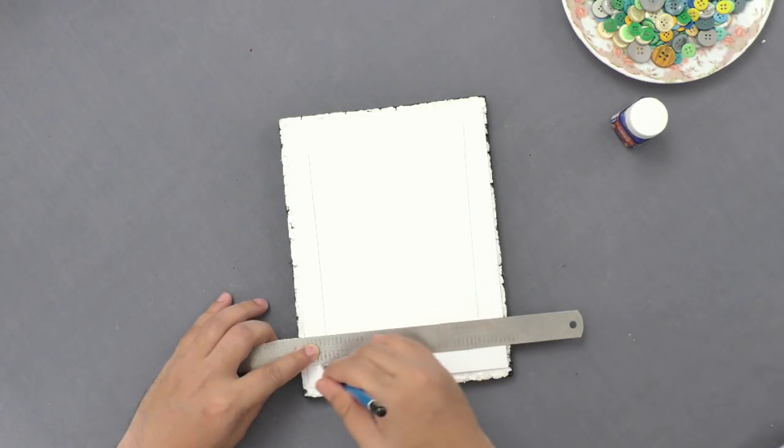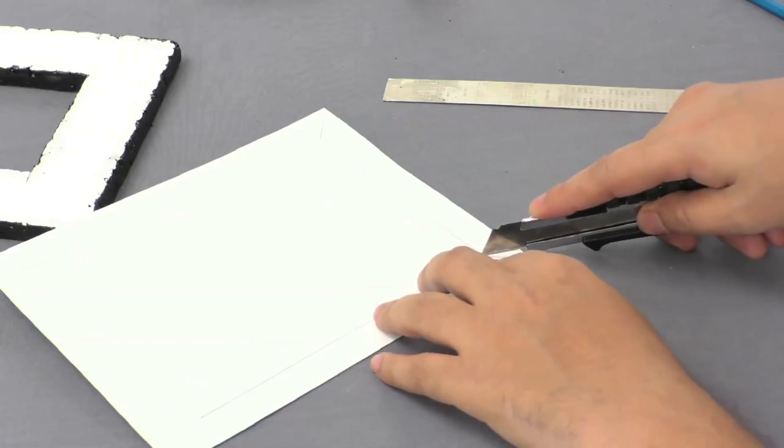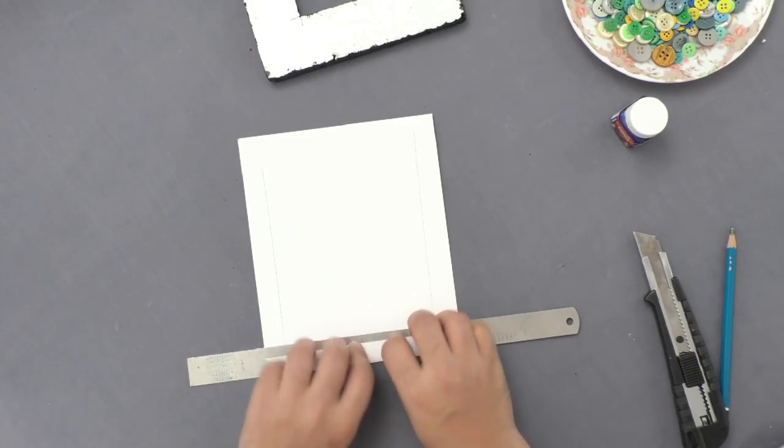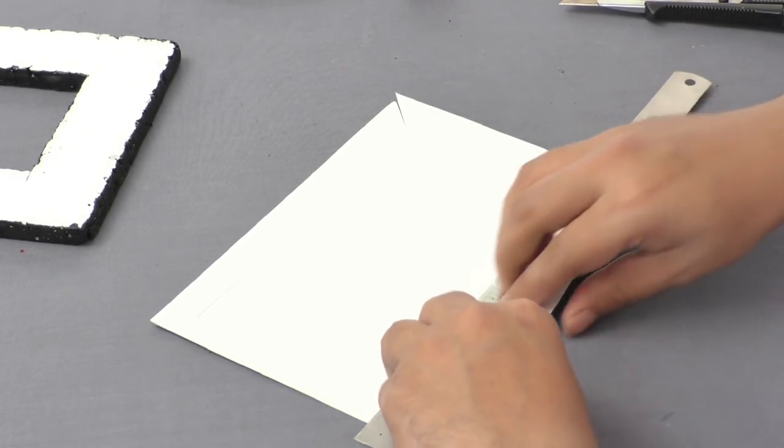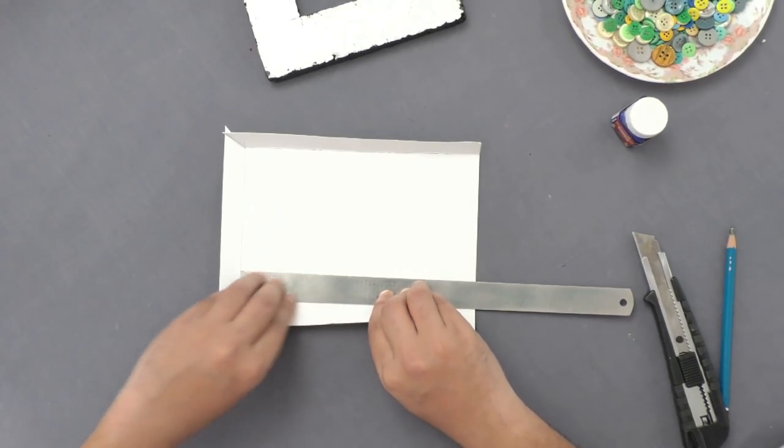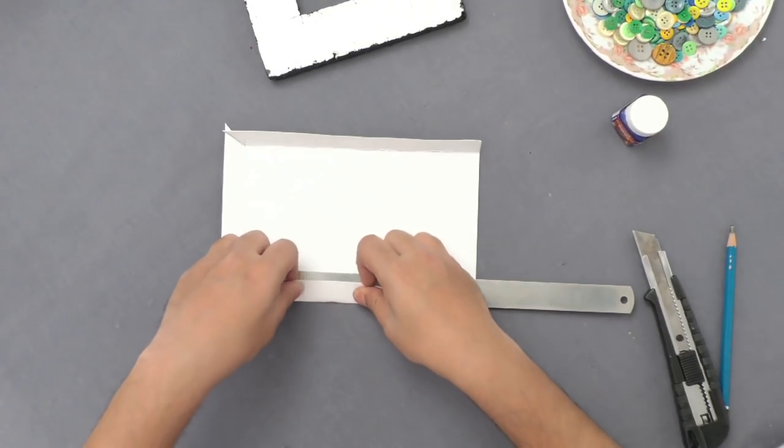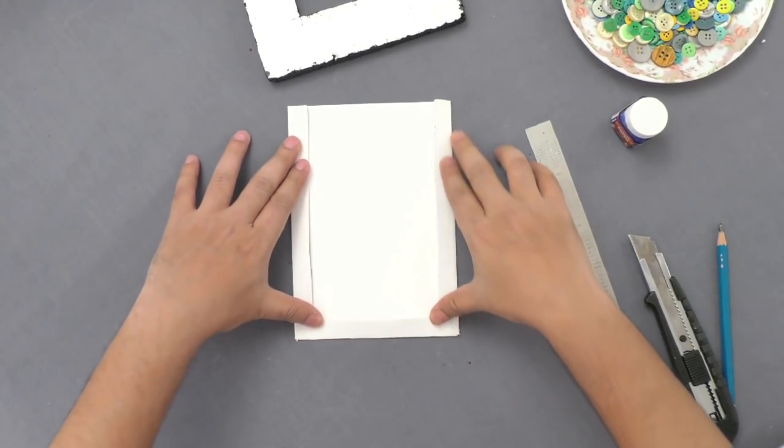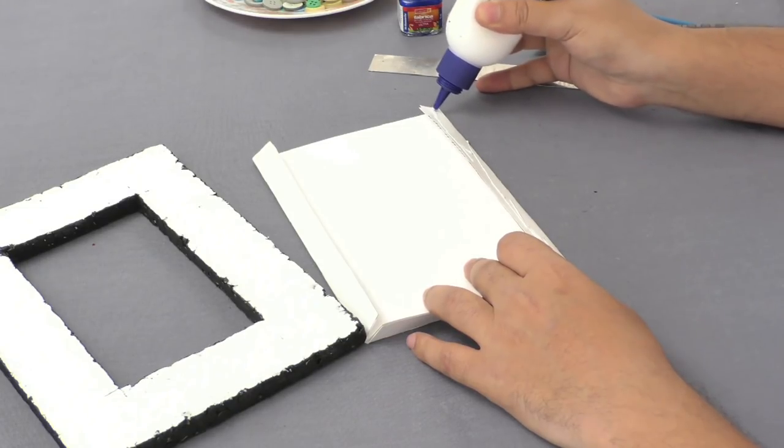Next, fold a card sheet from three sides to form a pocket. Using adhesive, paste this pocket on the frame.